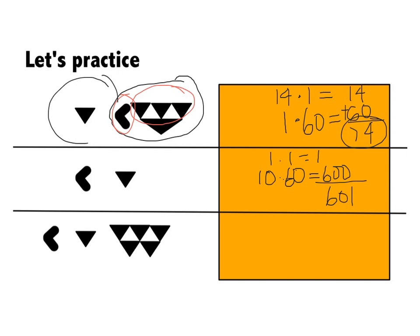Last example, in the ones place, we have 1, 2, 3, 4, 5 triangles. So, 5 times 1 is 5. In the 60s place, we have 1. So, 1 times 60 is 60, and in the 3,600 place, we have 10. So, 10 times 3,600 gives us 36,000. When we sum this all together, we get 36,065.